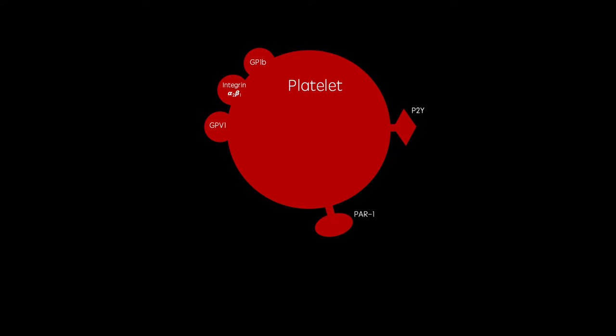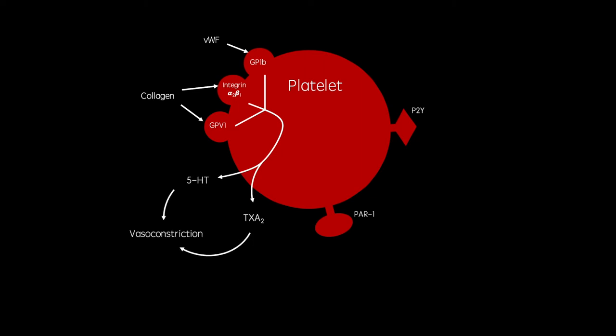I'm now going to explain the process of platelet aggregation. This is a platelet. When a blood vessel is damaged, collagen and von Willebrand factor from the extracellular matrix are exposed to the blood. Platelet adhesion molecules GP6, GP1B, and integrins bind to these proteins and begin the process of platelet activation. This causes the platelet to release serotonin and thromboxane A2, both of which mediate vasoconstriction, pushing activated platelets closer together to promote aggregation. Platelets are also activated by thrombin, which you'll see more about in the coagulation cascade next.